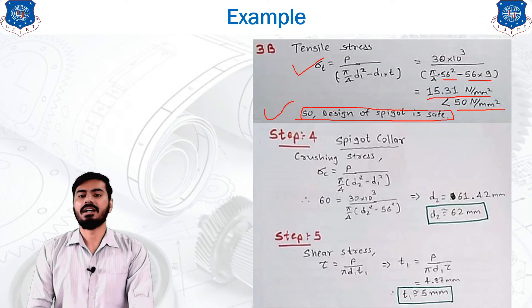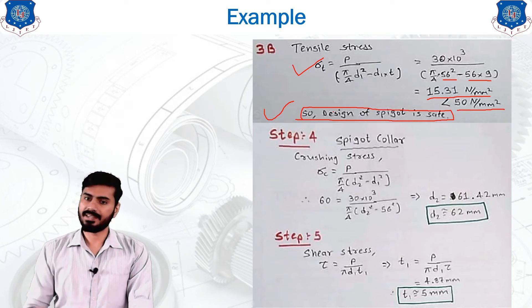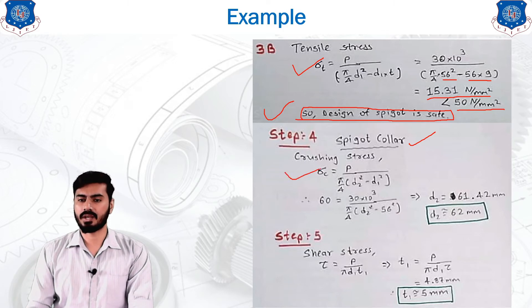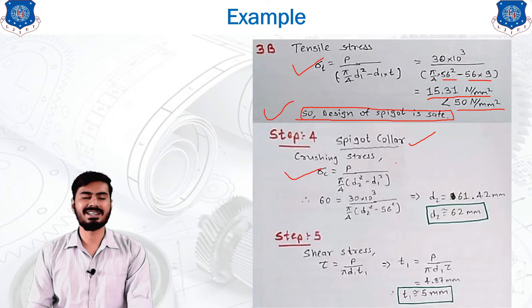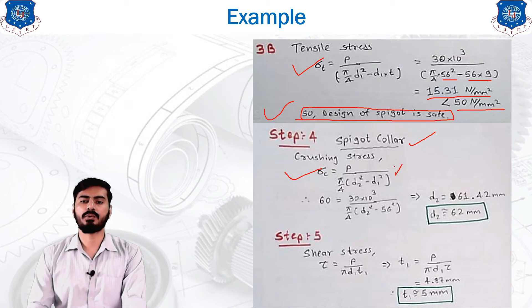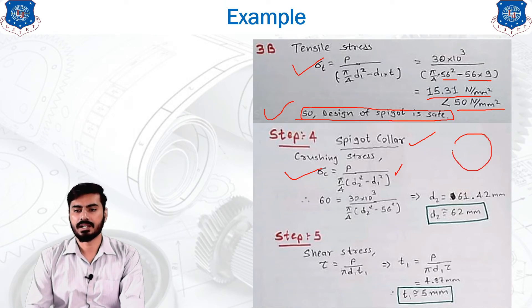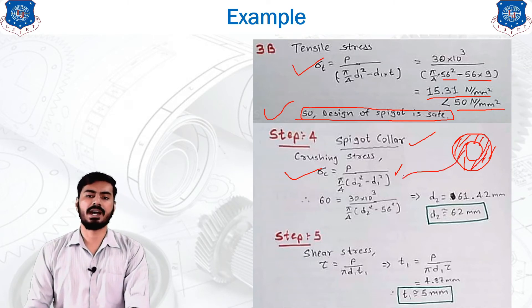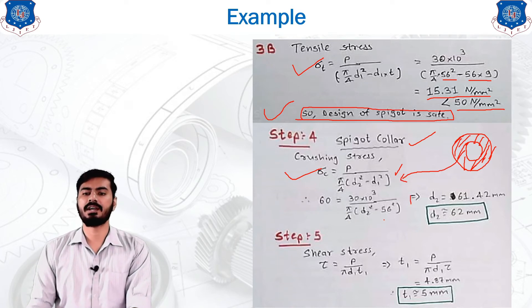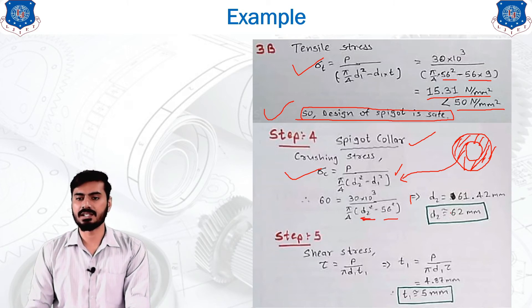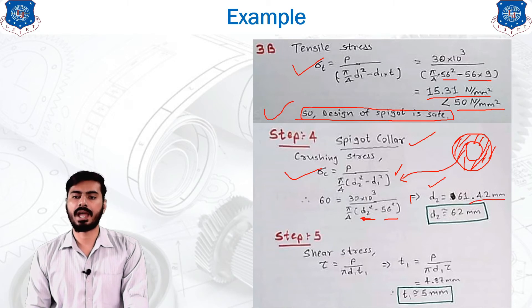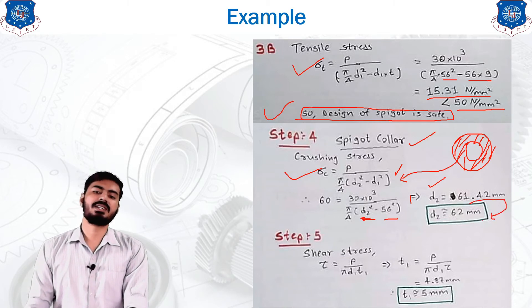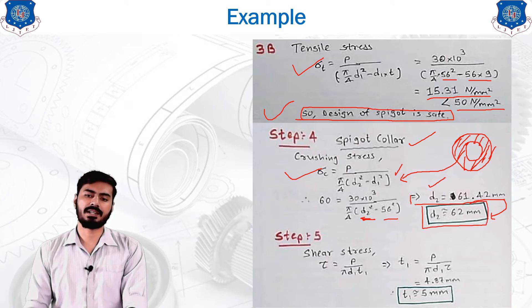Step 4 is the spigot collar, designed using the crushing stress equation. The crushing stress for the spigot collar is σc = P / (π/4 · (d2² − d1²)). The resisting area is the ring of the spigot collar. Substituting all known values, the only unknown is d2. Calculating gives d2 = 61.42 mm, rounded to 62 mm. So d2 = 62 mm is the final answer for Step 4.